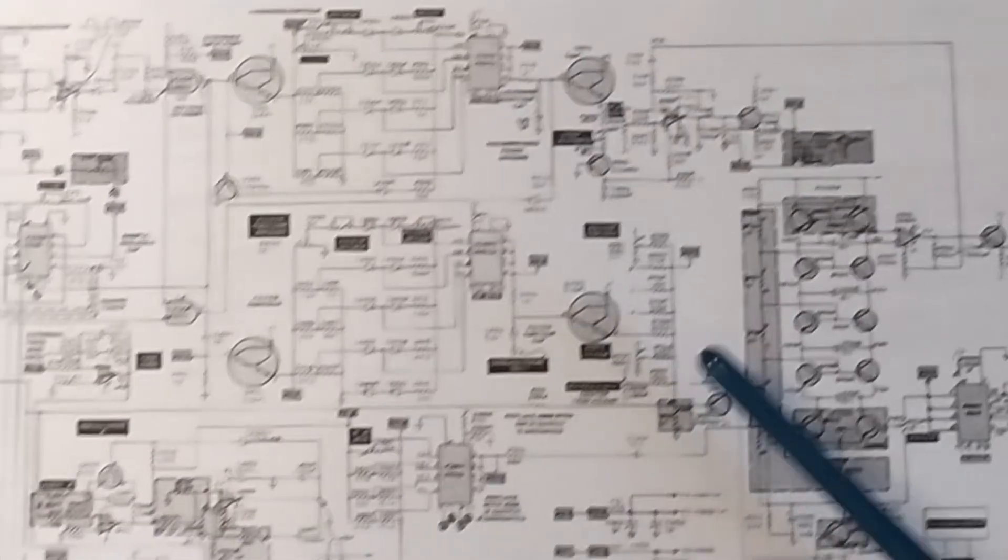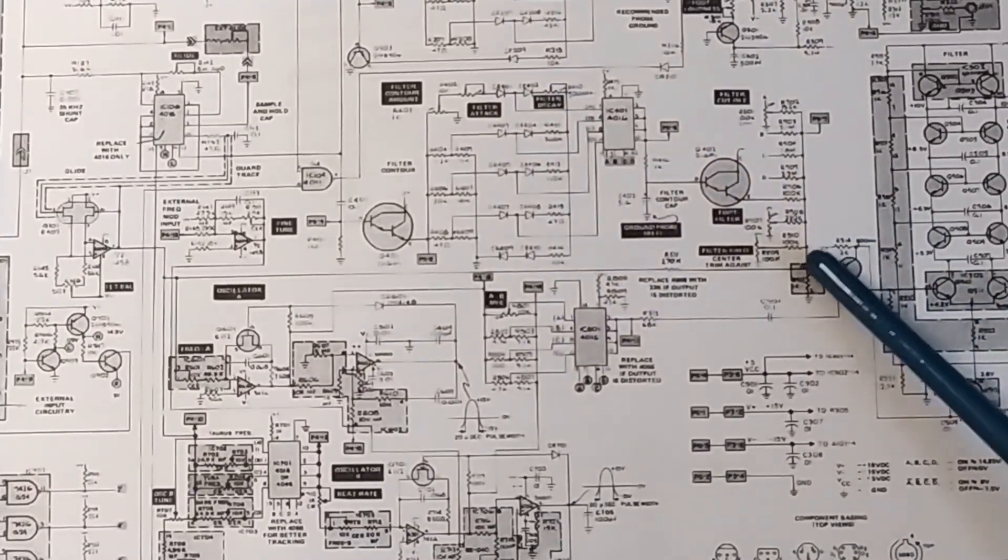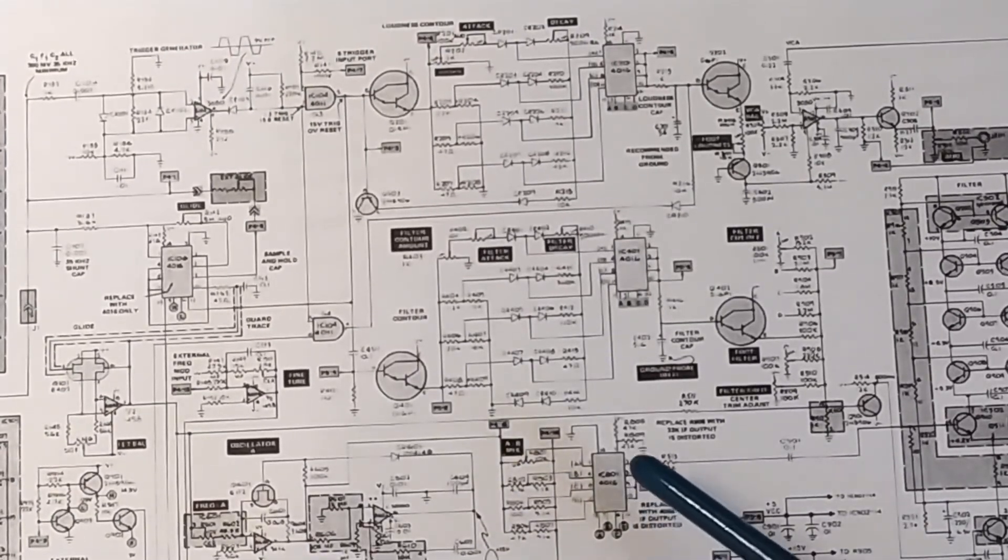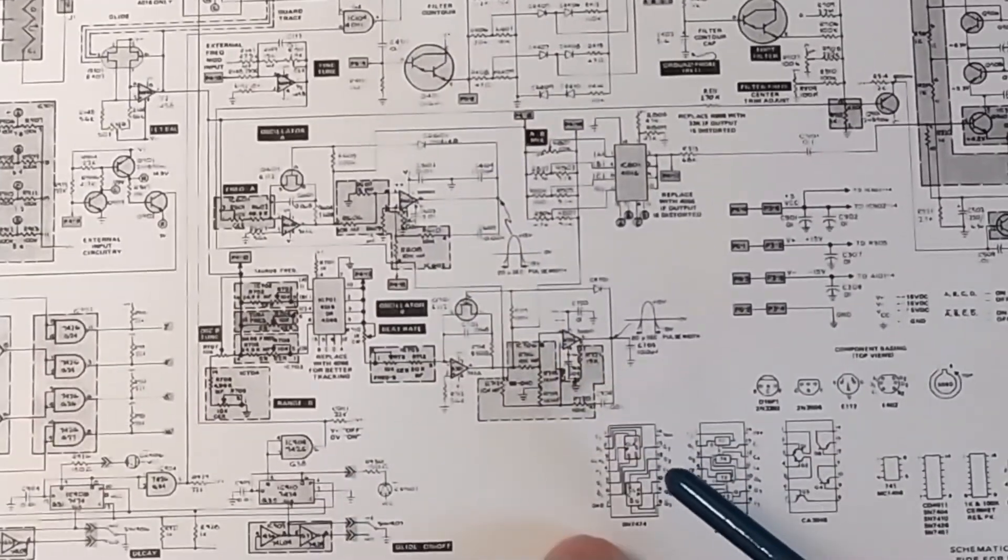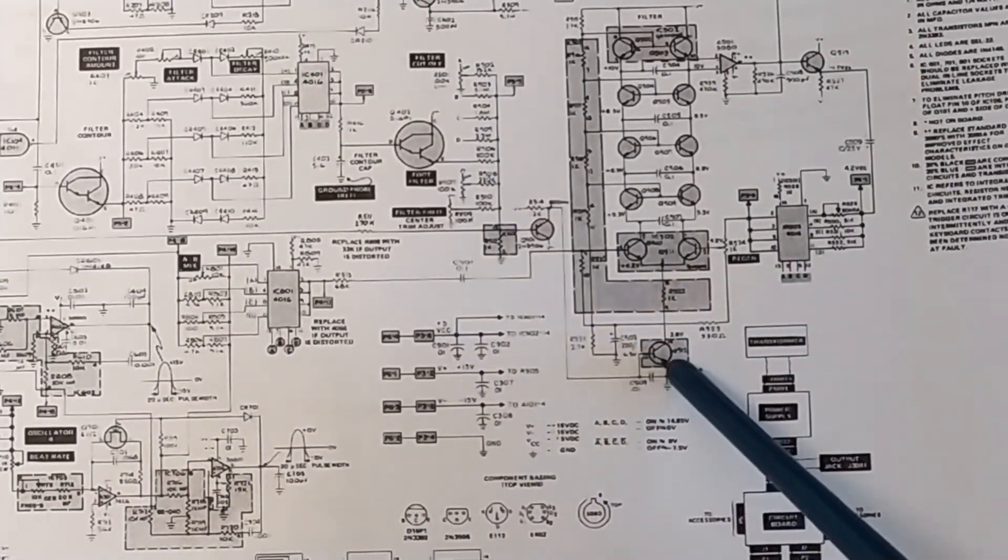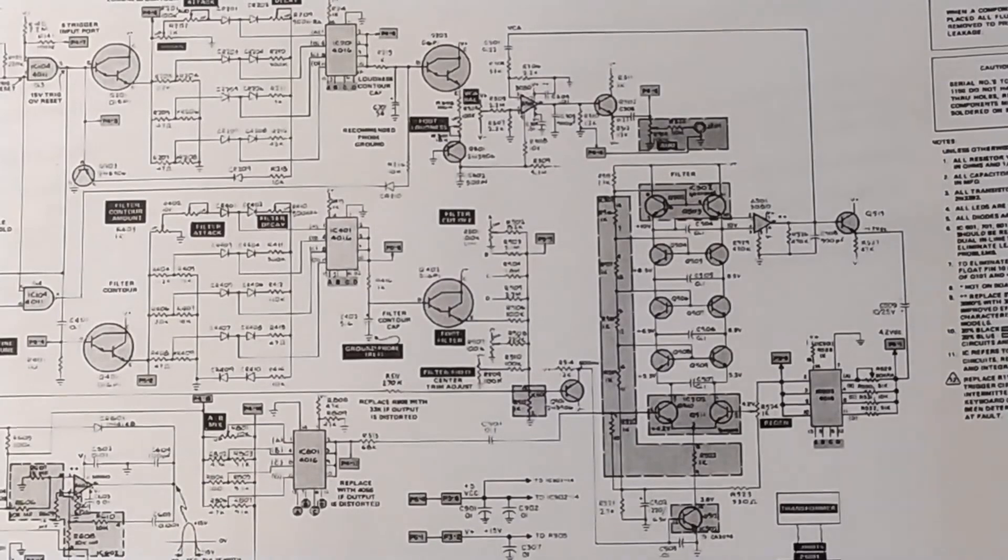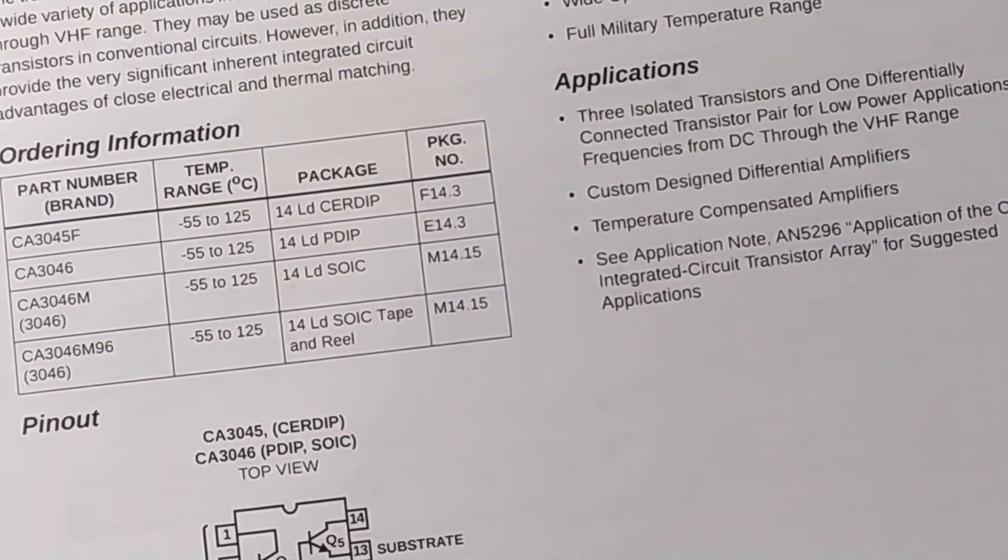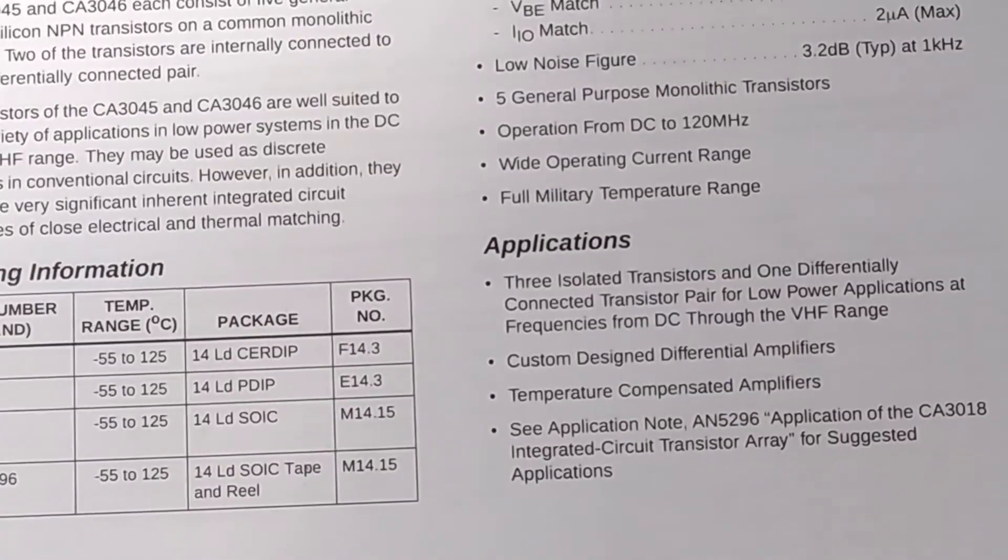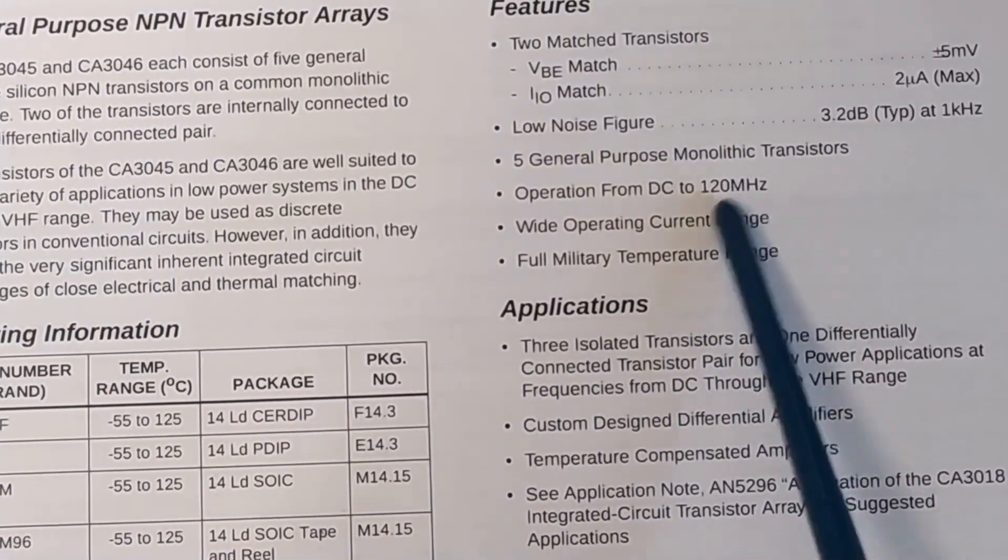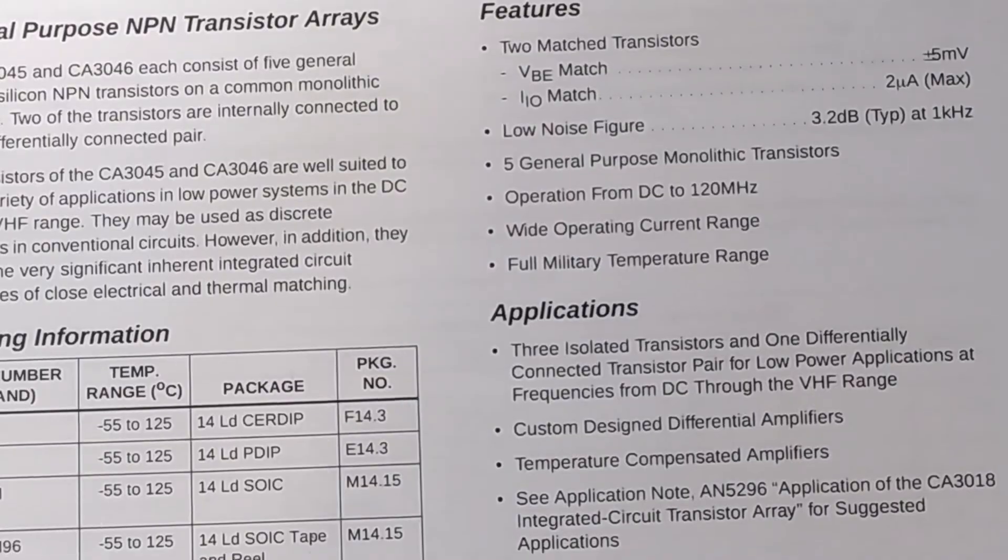And then in a couple more places in the circuit, there are transistors that are actually out of that package. I can't find one at the moment, but earlier I saw one. Oh, there's another one. So these have found applications in synthesizers and these sort of things. Although, you couldn't only use them in the audio range. You could go up to 120 MHz, which is quite a lot.